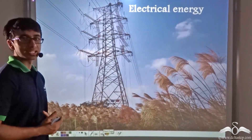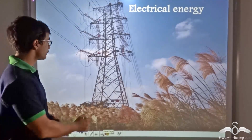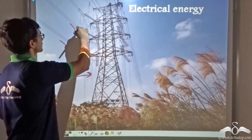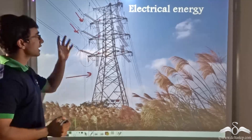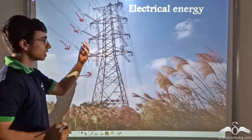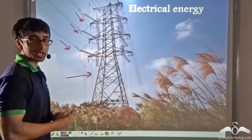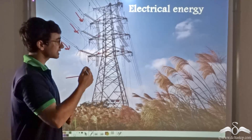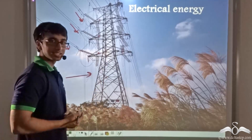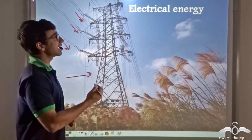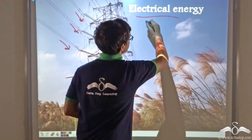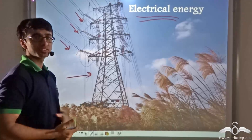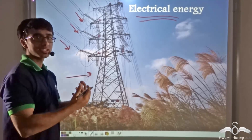Now we talk about electrical energy. These power lines have a lot of wires travelling from the power station onwards. It is through these wires that electrical energy is transferred from the power station to our houses. Electricity travels along these lines and comes to our homes, and with the help of this electrical energy we can run appliances like the television, computer, water purifier, and fridge.